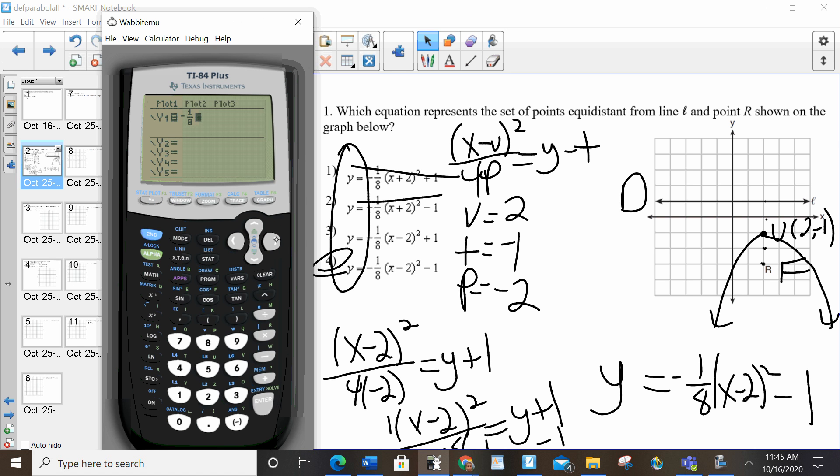1 eighth, x plus 2 squared plus 1. Zoom 6 is a regular graph. Is that parabola in the same spot as the one that I have on my grid? No, the one on my grid is in quadrant 4. The vertex is, that's not it. So then I can go to choice 2. That's x plus 2 squared minus 1. Is that the graph that I have? No.